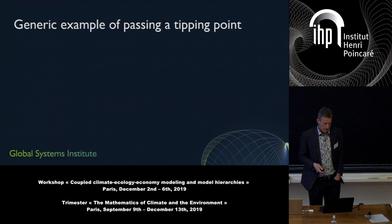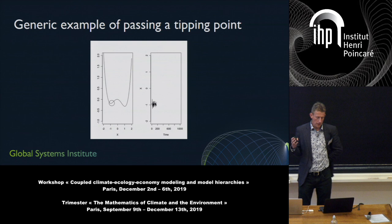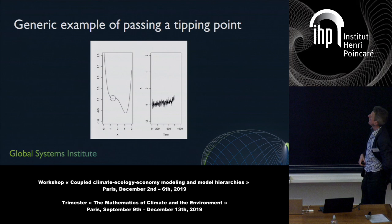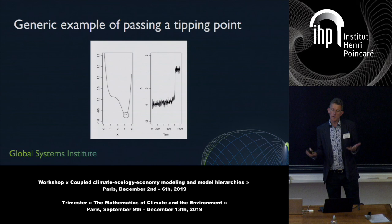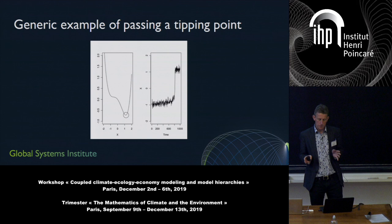Here's a little video or cartoon of a system passing a tipping point where we're forcing it gradually. It's subject to stochastic fluctuations, but at some point the state that it started in is going to lose stability and the system has to transition into the other state — where self-amplifying positive feedbacks within the system dynamics take over from the buffering negative feedbacks. We have good reason to think that lots of parts of the climate system could behave like this.